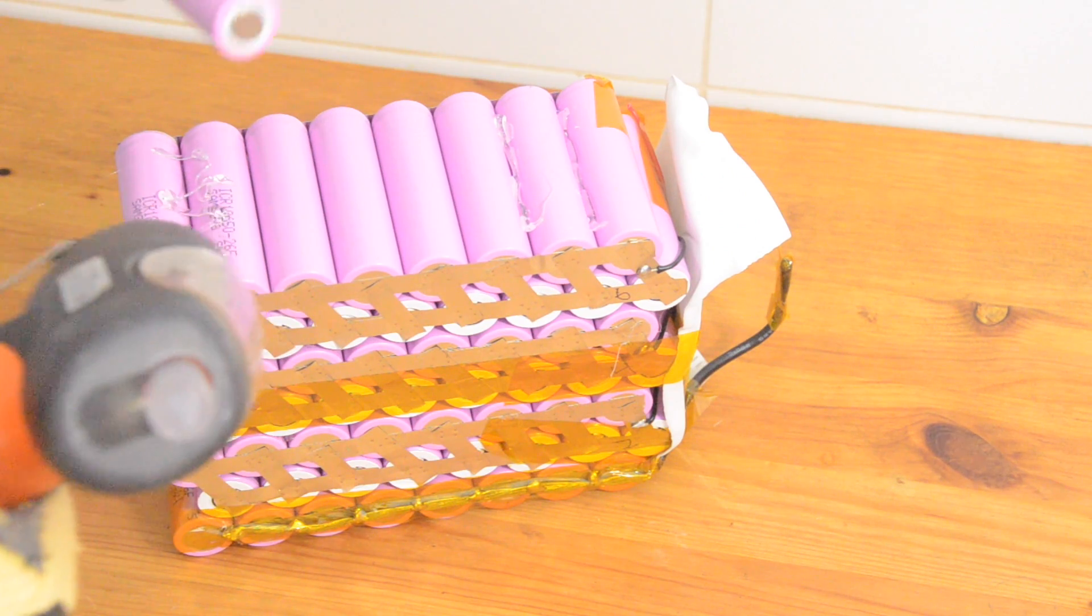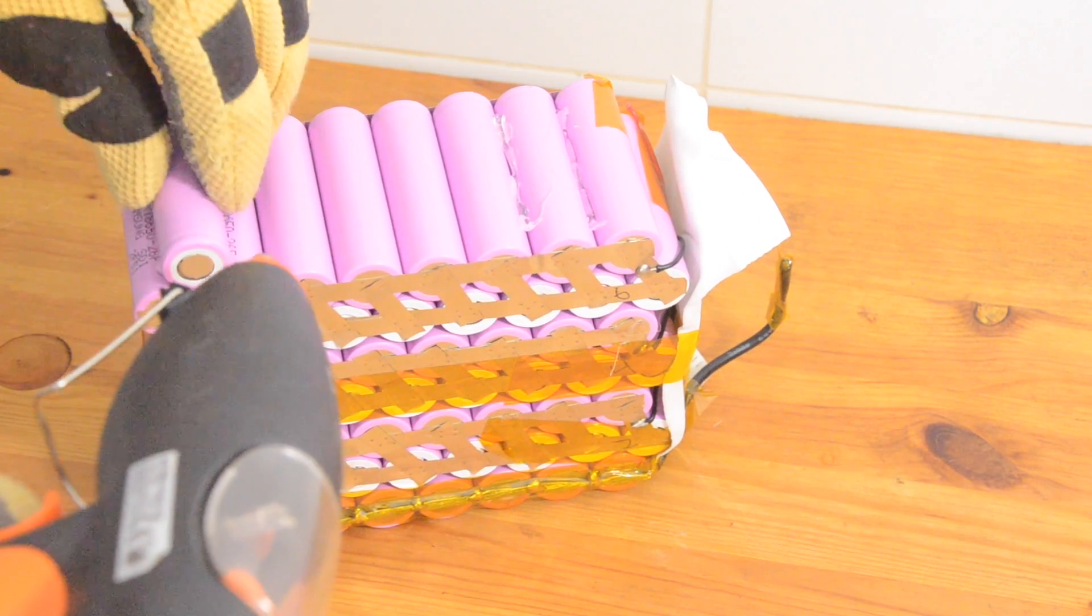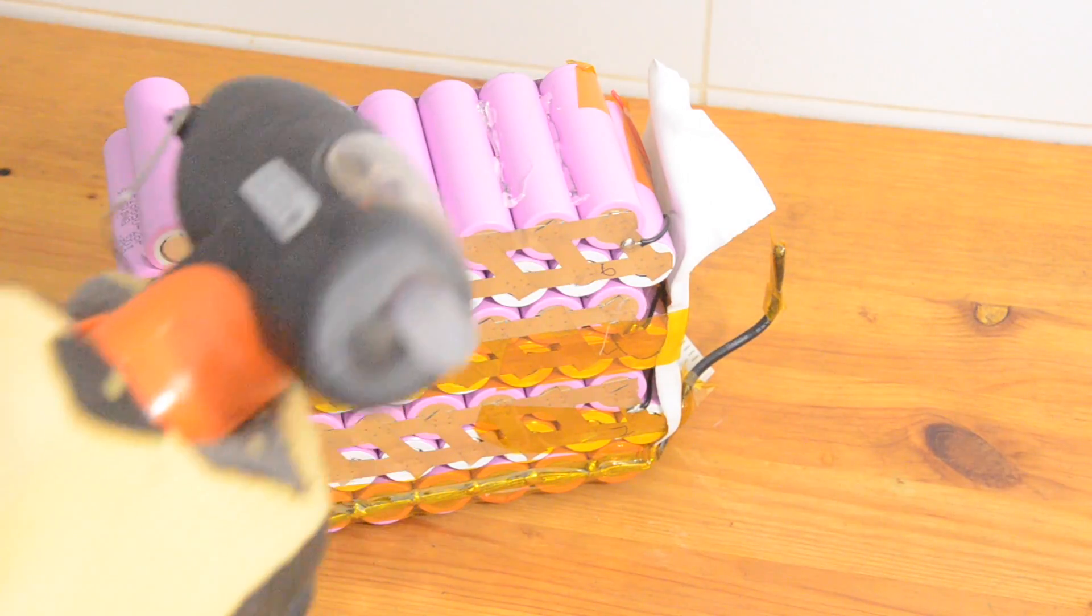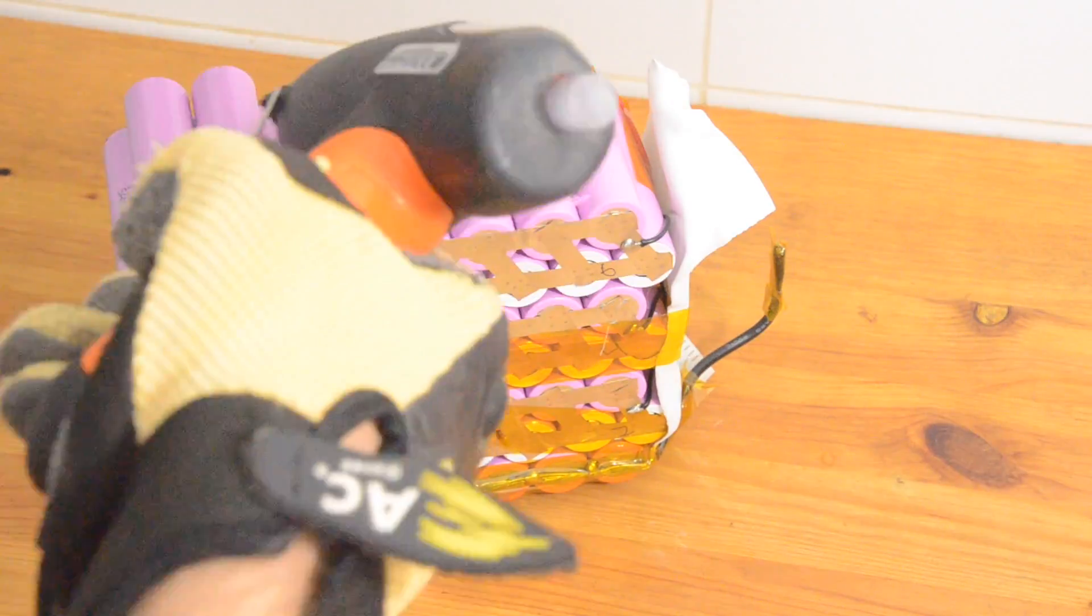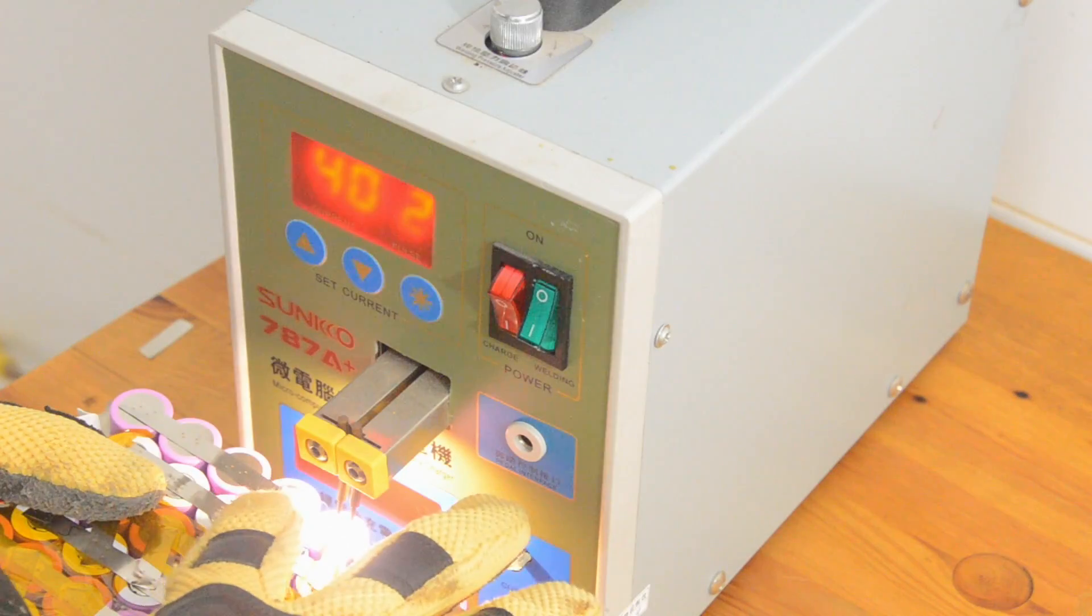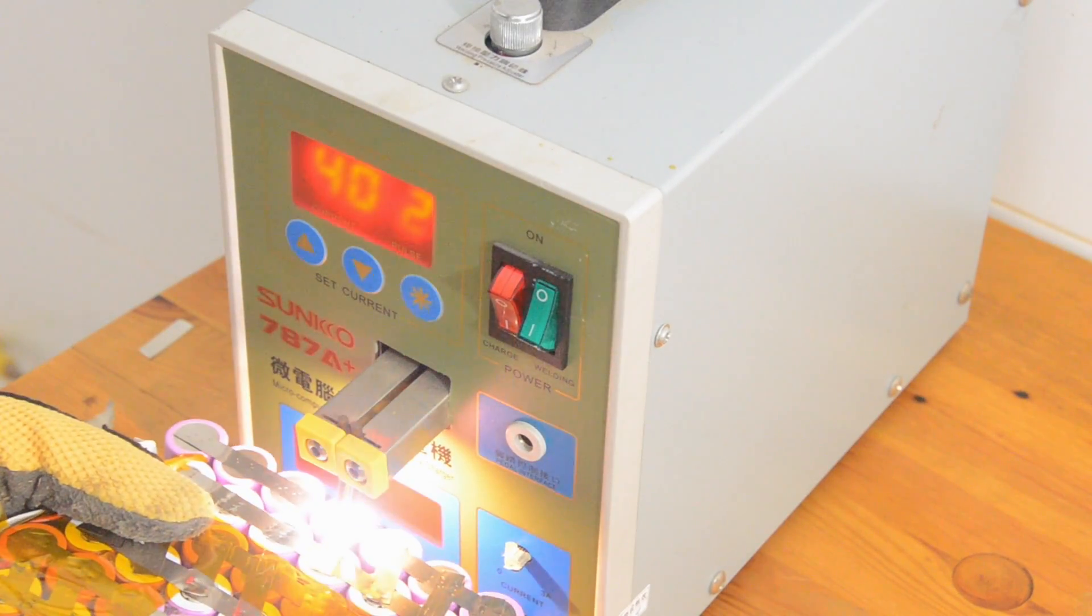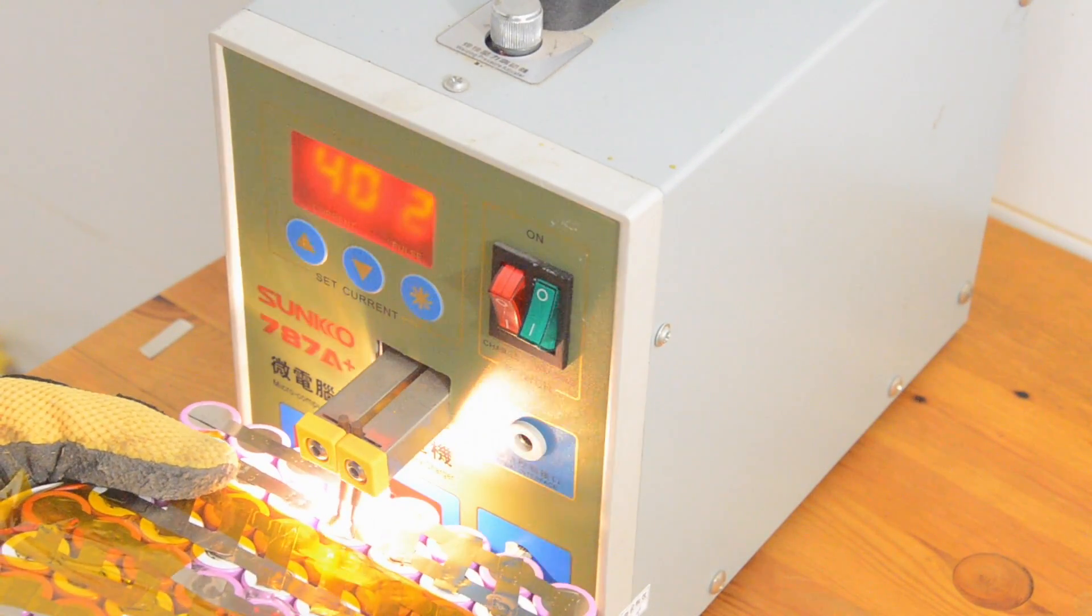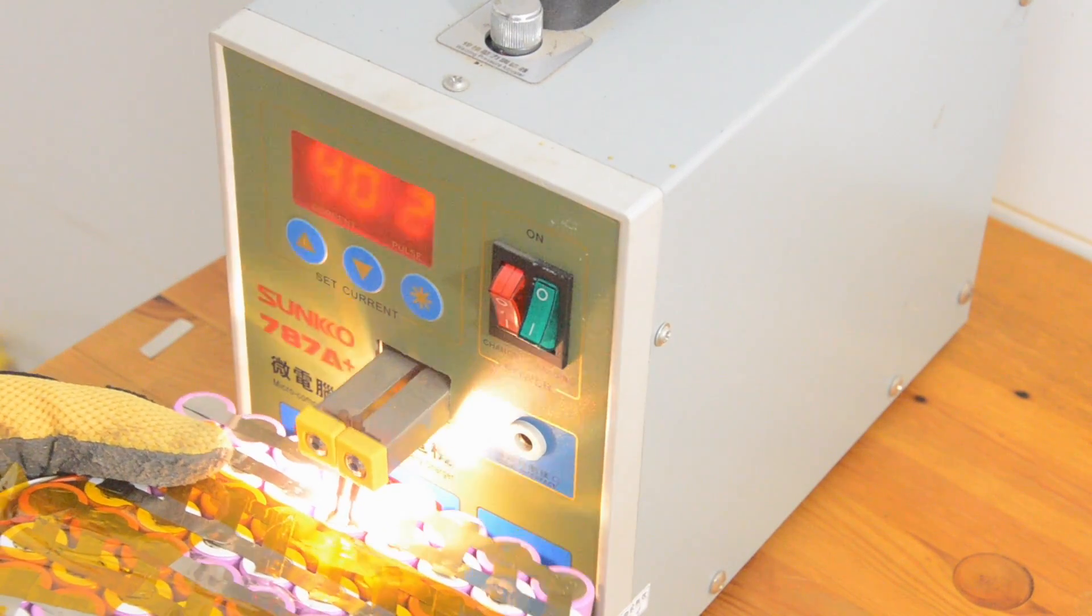So now I'm just going to start adding the eighth group of cells here. And you can see that I'm making sure that when I glue these on, they're facing the opposite way of the previous group of cells. That way I can easily weld them in series. And now I've cut a few short pieces of nickel strip. I'm just going to start doing these series connections here, going from the positive end of the seventh cell group to the negative end of the eighth cell group.